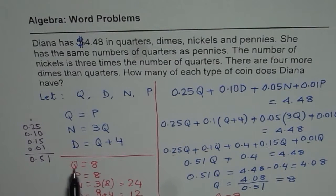So we get our answer. That there are 8 quarters, 8 pennies, 24 nickels, and 12 dimes. So that is how you should be solving this question. I hope that helps.